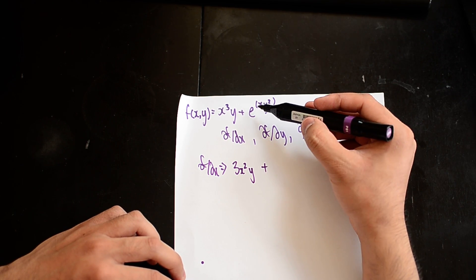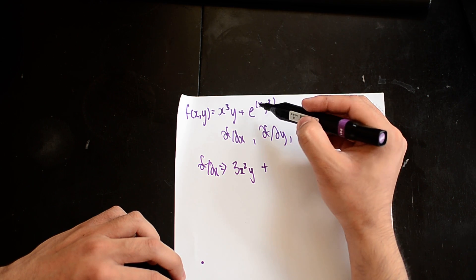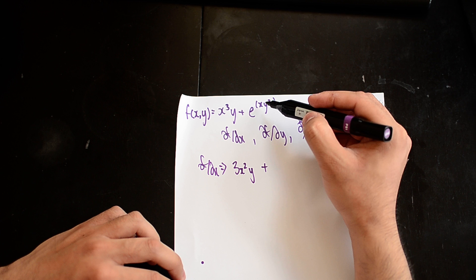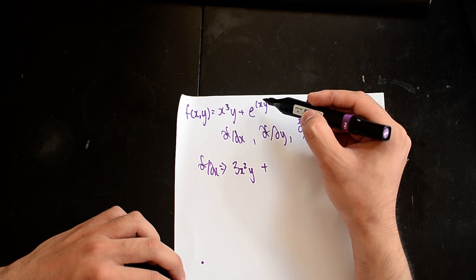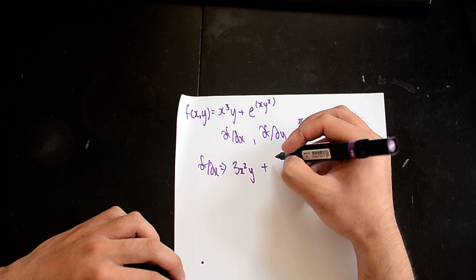Holding the y term constant, you're going to just get y²e^(xy²). I did this by using the chain rule and by differentiating this, so letting t equal this, do dt/dx and then differentiate e^t which becomes e^t.